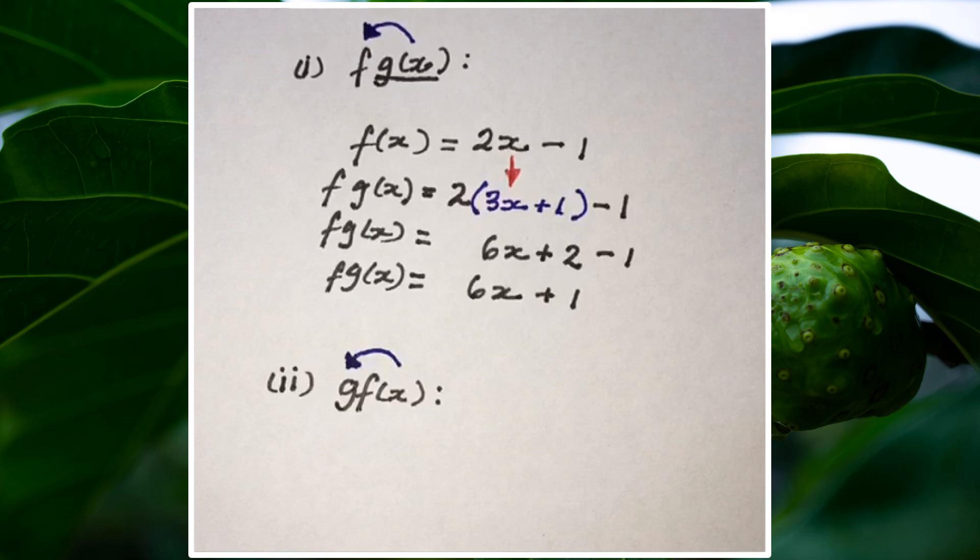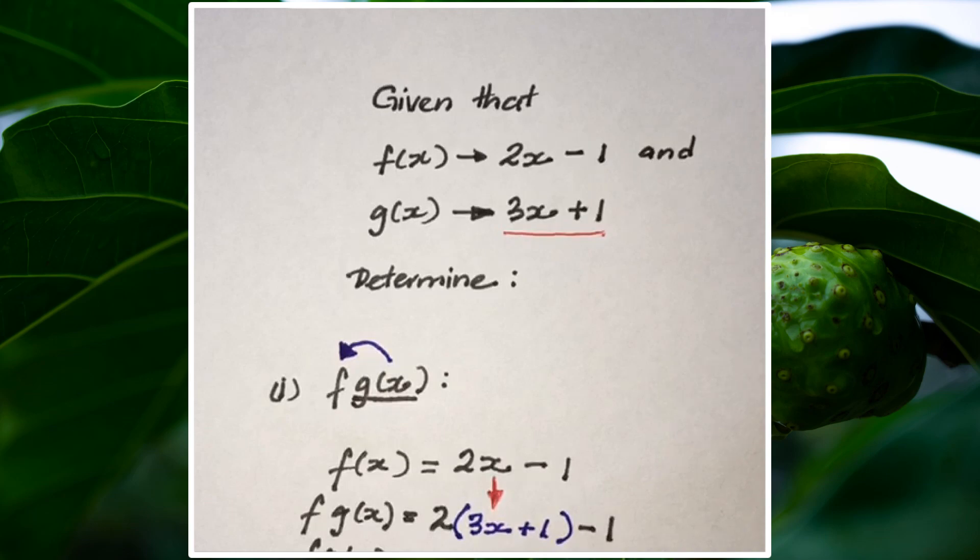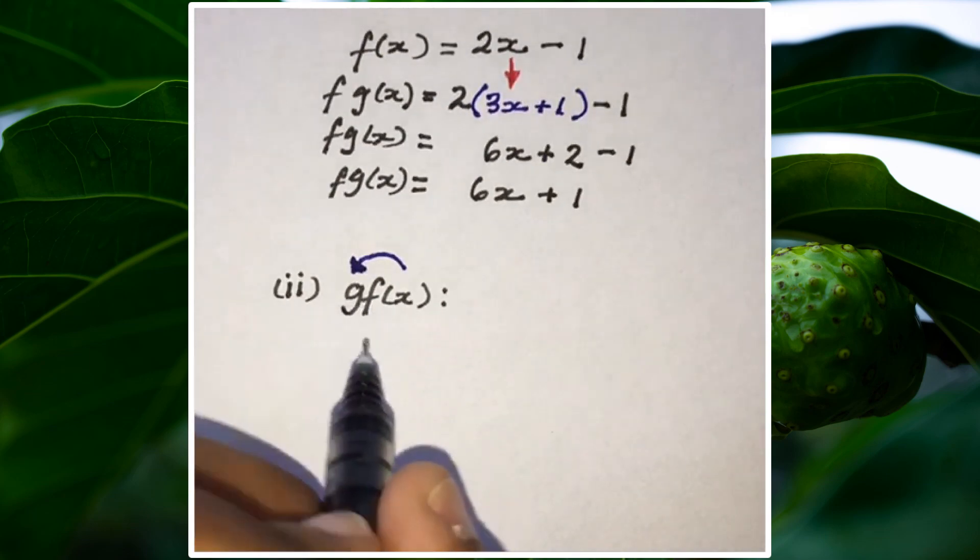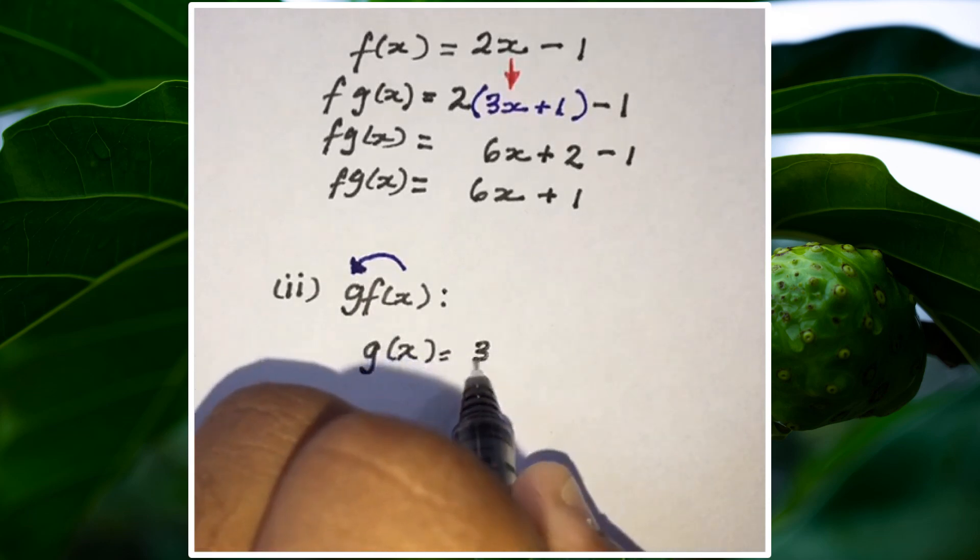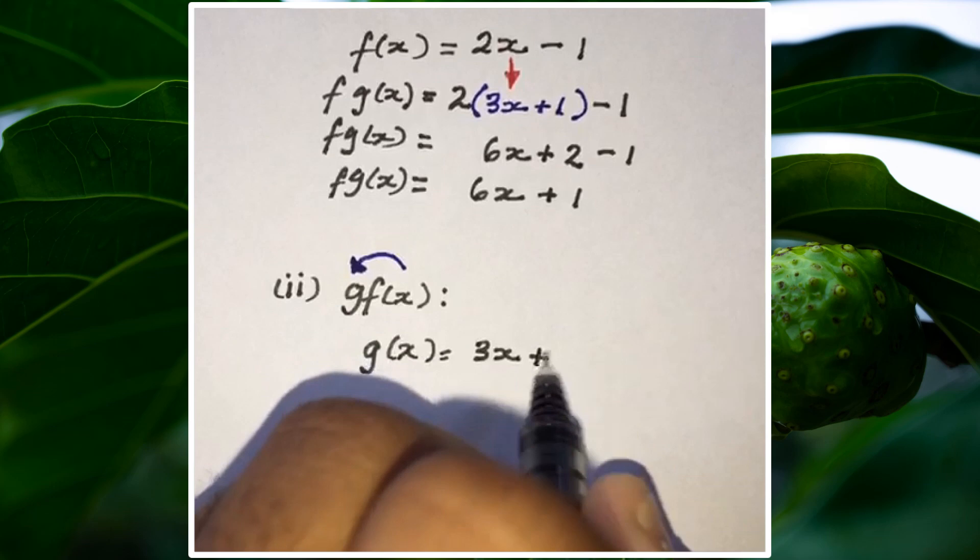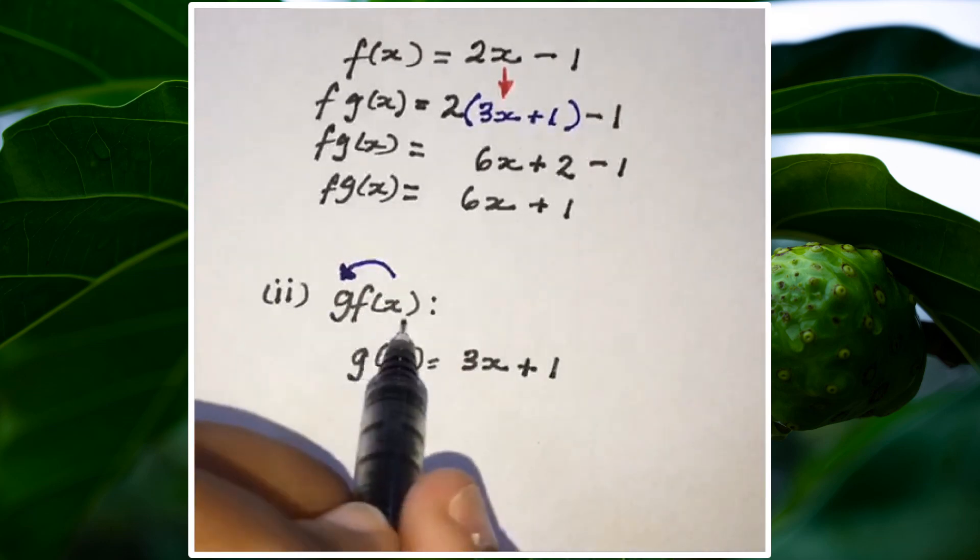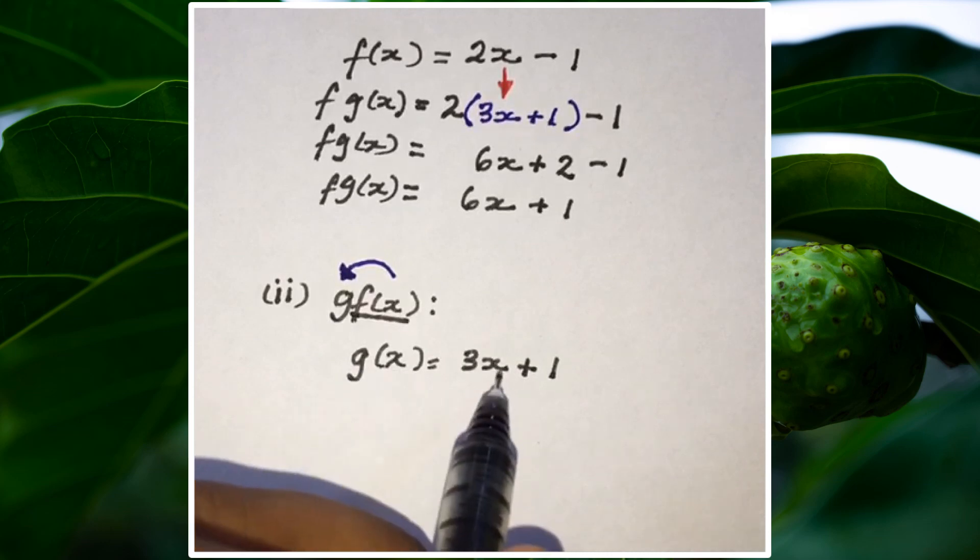So I'm going to start off with the host function, which is g. Looking at the notes, g(x) is 3x + 1. So I'm going to start with g(x) = 3x + 1. Now I'm going to substitute f(x), the whole function, inside g where there is x.